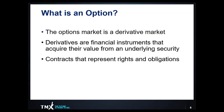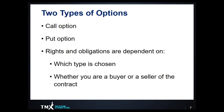For an options contract, we want to recognize that each contract represents rights and obligations. There are two types of contracts: a call option and a put option. Each contract represents a specific set of rights and obligations that are dependent on which type is chosen — whether you choose a call or a put option, and whether you are a buyer or a seller of the contract.